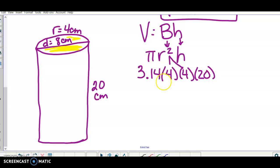So again, pi is dessert. Save it for last. So four times four is 16 times 20. Well, 16 times two is 32. And I can put my zero on the end.